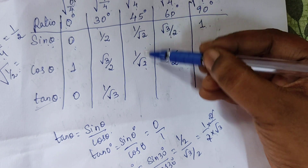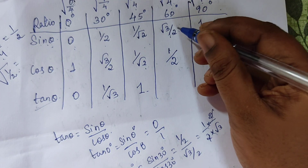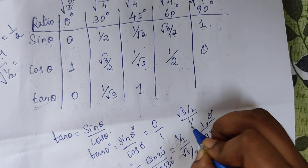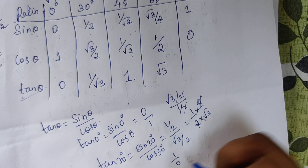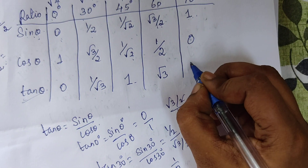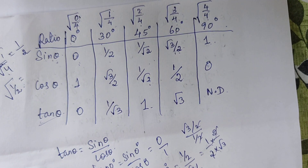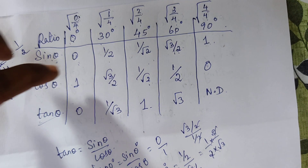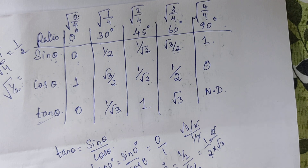For tan 60°, we get √3, and for tan 90°, we have 1 divided by zero, which is not defined. Finally, the remaining three ratios are the multiplicative inverses: cosecant is the inverse of sine, secant is the inverse of cosine, and cotangent is the inverse of tangent.